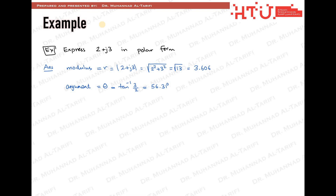You must be aware that there is always another solution to tan inverse that the calculator did not give you. You can calculate it simply by adding 180 degrees to the first given solution. We now have two solutions: one in the first quarter and the other in the third quarter. In this example, we choose the first one because it agrees with the quarter expected by the positive real and imaginary parts. The transformation is complete: 2 plus j3 equals 3.606 at the phase of 56.31 degrees.